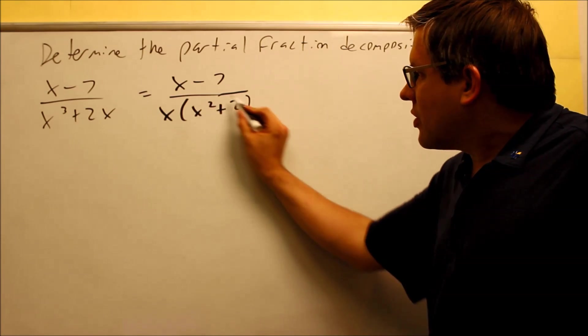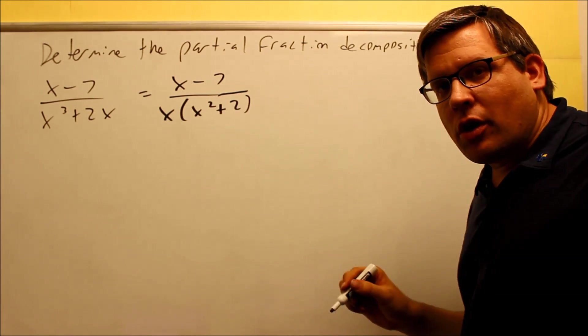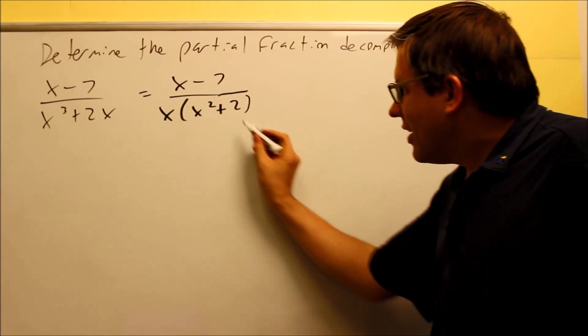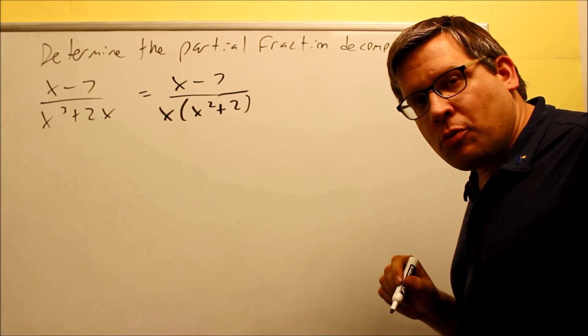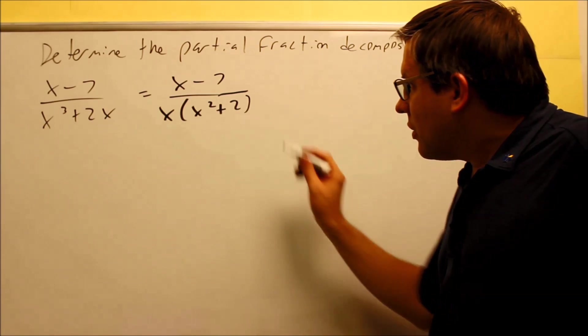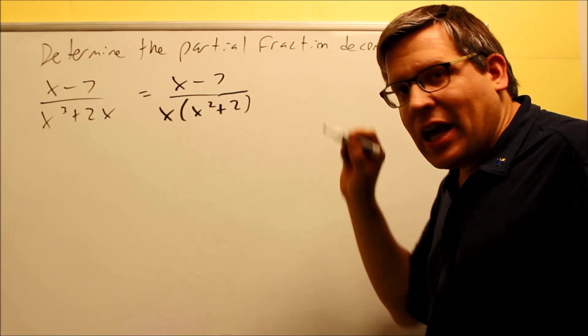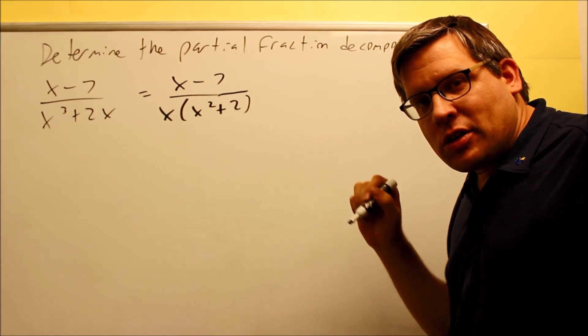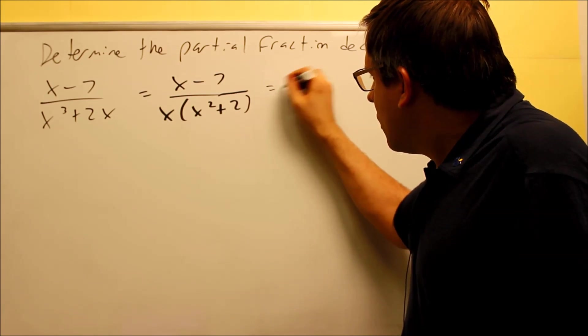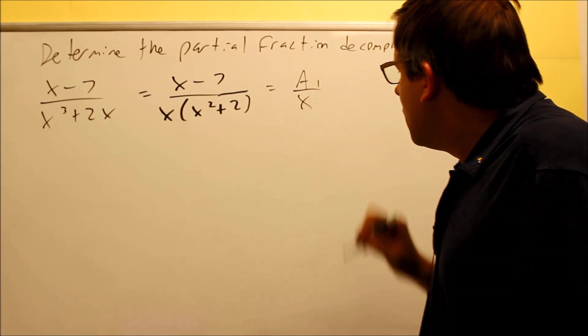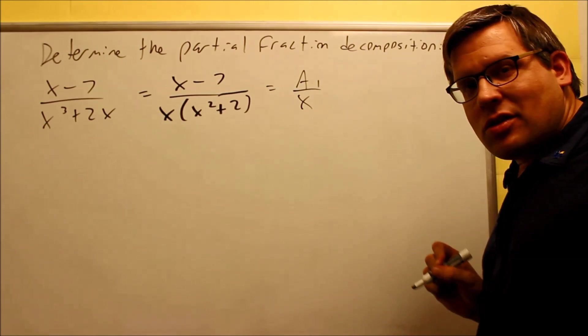Okay, so what we have here is this is actually going to be an example of rule number 3. This here is considered to be an irreducible polynomial. If it's irreducible, that means that when we split it up, we have to have the x term on top when we write that. Now this part can use rule number 1, so we're just going to go ahead and do a1 over x and that's going to be it.